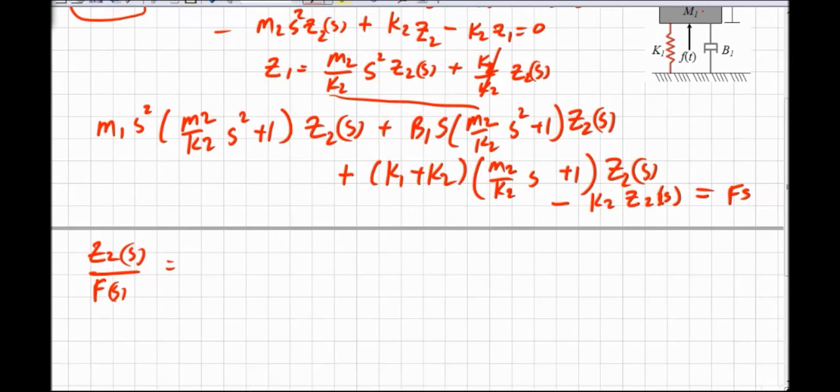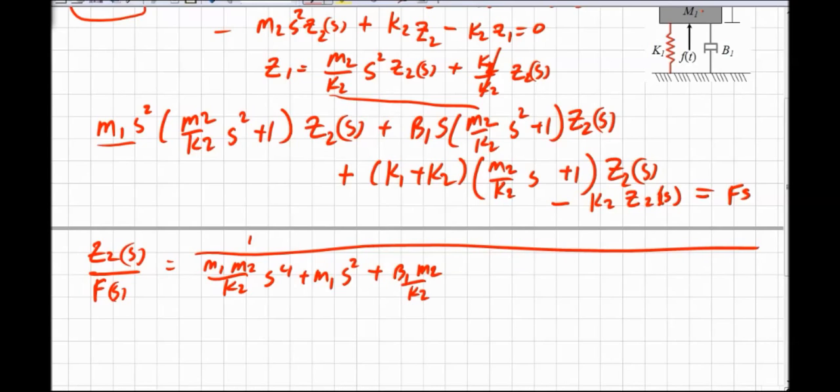So I'm going to end up with 1 over a whole bunch of things. M1 M2 over K2 S to the fourth. So that's multiplying this times this. And then I multiply M1 S times one. So that's just plus M1 S squared plus B1 M2 over K2 S cubed plus B1 S.